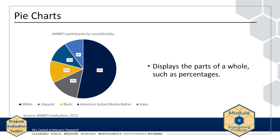A pie chart displays the parts of a whole and is most commonly used for percentages. Because it can be difficult to interpret or compare segments accurately, a pie chart can be misinterpreted when segments are similarly sized or when some segments are small. A pie chart should always have as few categories as possible and be clearly labeled. This example pie chart displays the total number of AMP participants by race or ethnicity.